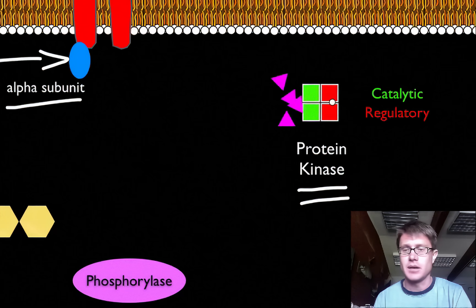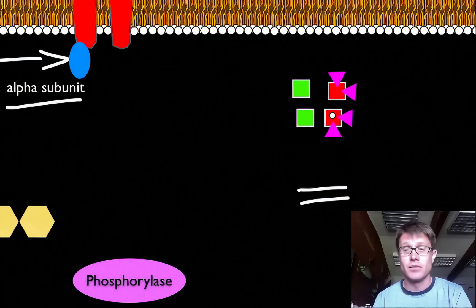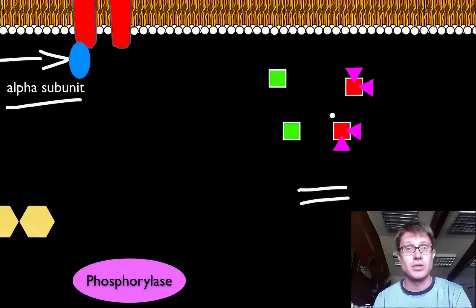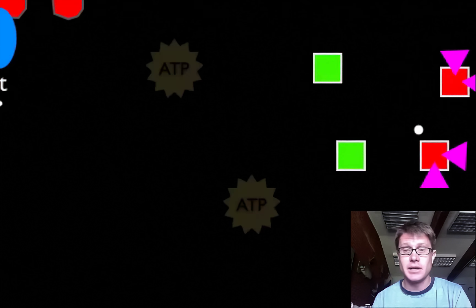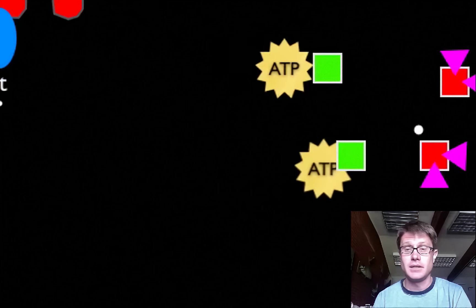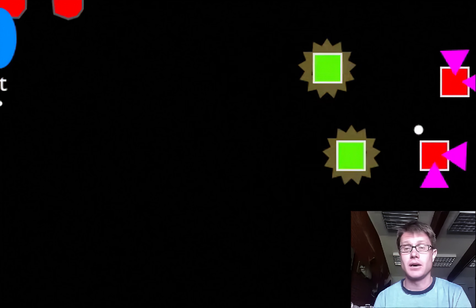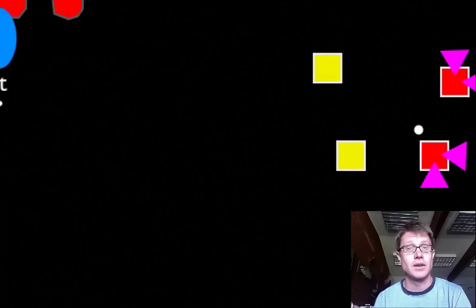But let's watch what happens to the cyclic AMP. It will actually bind to those regulatory portions of the protein kinase and it releases the catalytic portions. And so now we have this cascade. In other words we have this cascade of energy. Those catalytic portions are going to become phosphorylated. In other words they're going to pick up energy from ATP and they're going to become activated. And they change now from a green to kind of a yellow activated color.